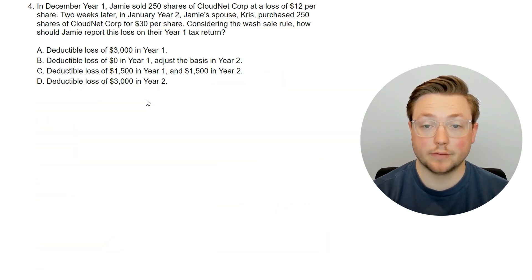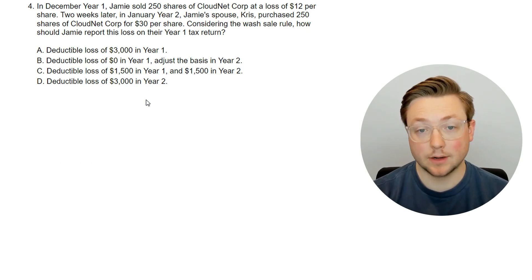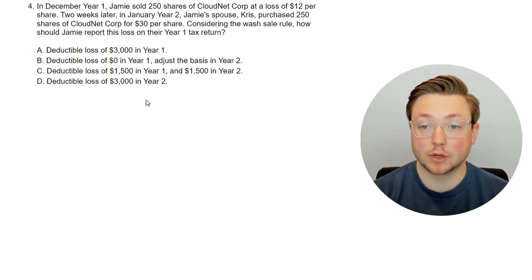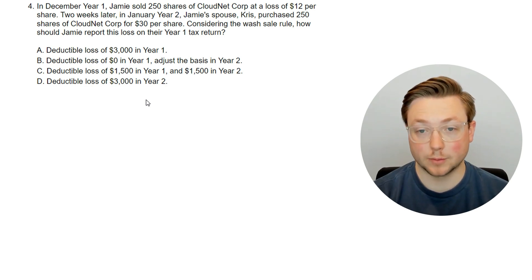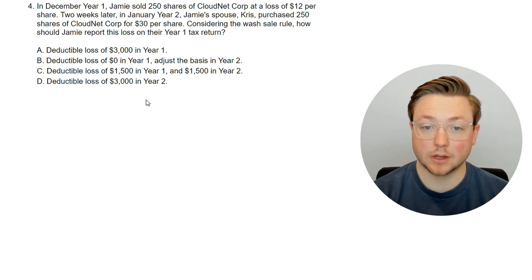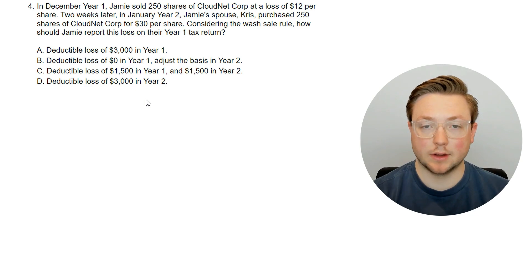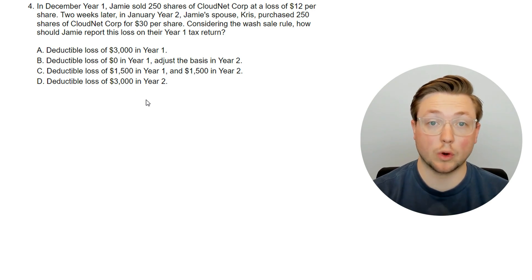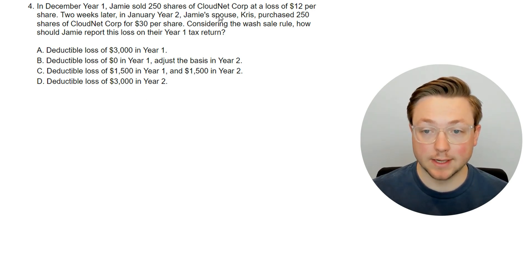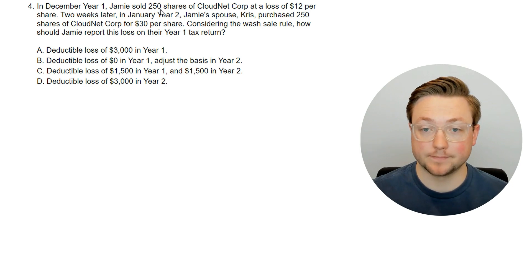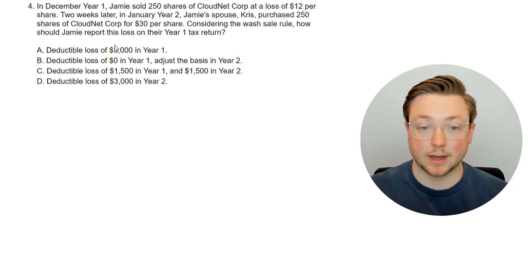Let's go to the next question. In December year one, Jamie sold 250 shares of CloudNet Corp at a loss of $12 per share. Two weeks later in January year two, Jamie's spouse Chris purchased 250 shares of CloudNet Corp for $30 per share. Considering the wash sale rule, how should Jamie report this loss on their year one tax return? Since they're married, it's assumed they're filing jointly.